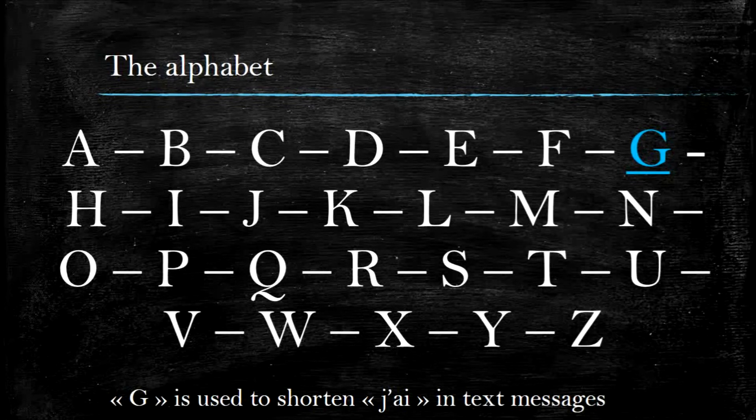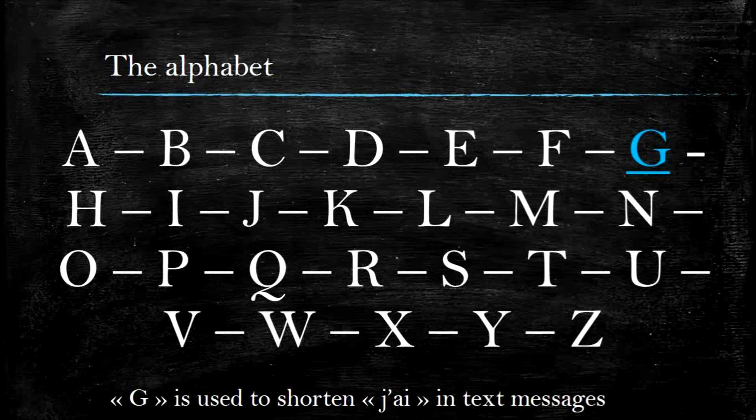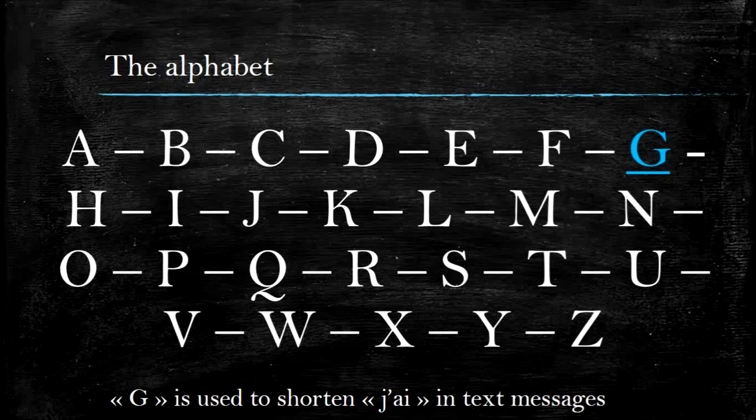Don't worry, you'll get used to it. Fun fact, the letter G is frequently used in text to shorten "j'ai," meaning "I have" or "I do" in French, because it's pronounced the same way.